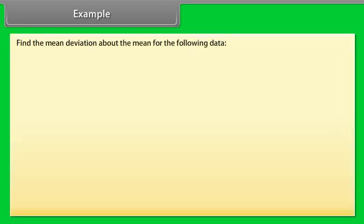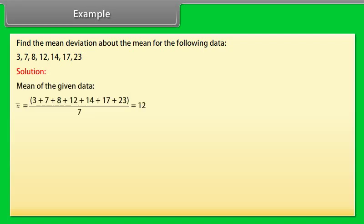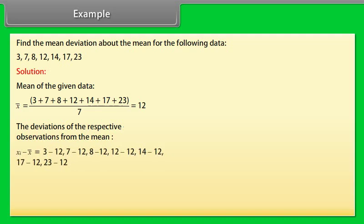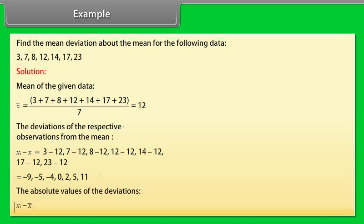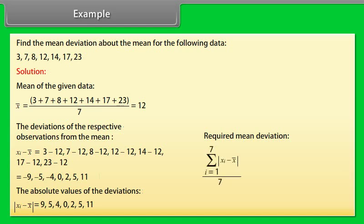Example: Find the mean deviation about the mean for the following data. The mean of the data is X̄ = 12. The deviations of the respective observations from the mean (Xᵢ − X̄) are: −9, −5, −4, 0, 2, 5, 11. The absolute values |Xᵢ − X̄| are: 9, 5, 4, 0, 2, 5, 11. Finally, the mean deviation = summation from i=1 to 7 of |Xᵢ − X̄| divided by 7, which is 5.14.